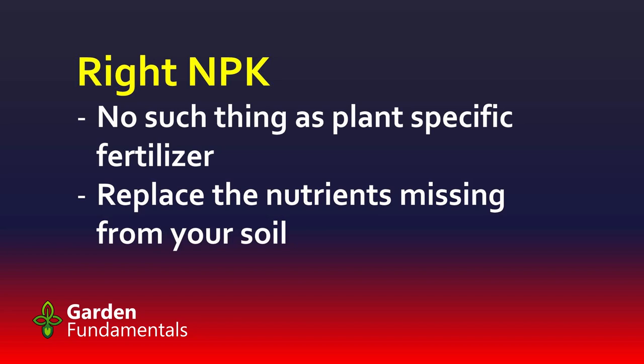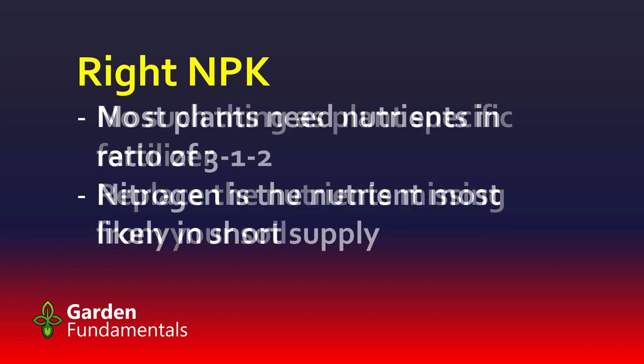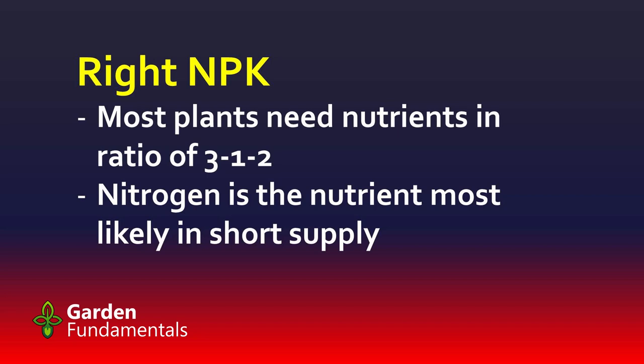How do you know what's missing from your soil? The only way to know is to get it tested — the lab will also tell you which nutrients to add, and that is the right NPK. Now, I know most of you are not going to get your soil tested, and I don't even recommend it. I just grow a lot of plants, and if they grow, I don't have a nutrient deficiency and I don't need to add fertilizer. When we look at plants, they use NPK in the ratio of 3-1-2, so that's a good ratio for any fertilizer you might want to add.